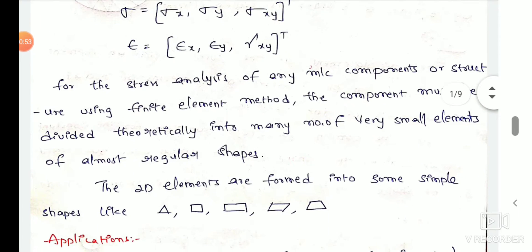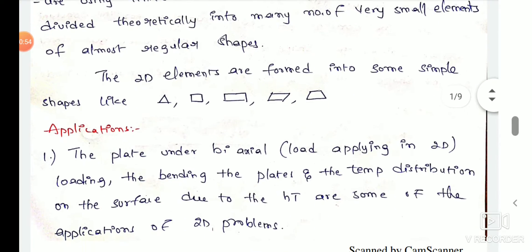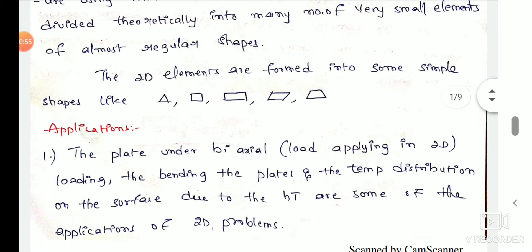We will discuss the two-dimensional elements. These include triangle, rectangle, square, and quadrilateral. So these are two-dimensional elements.